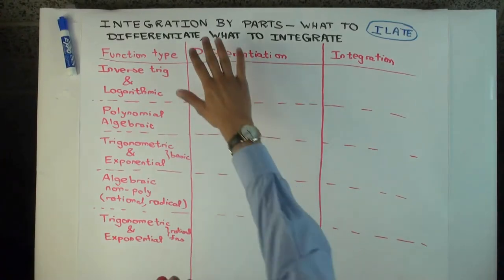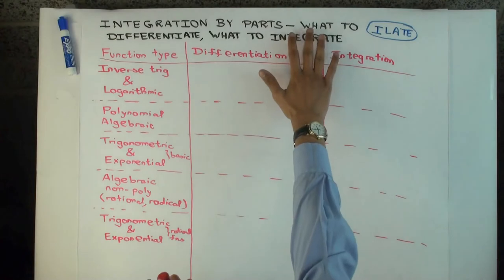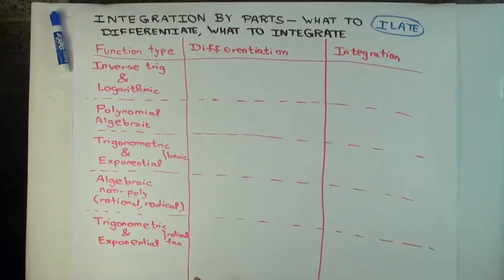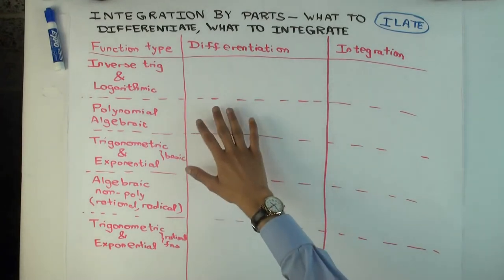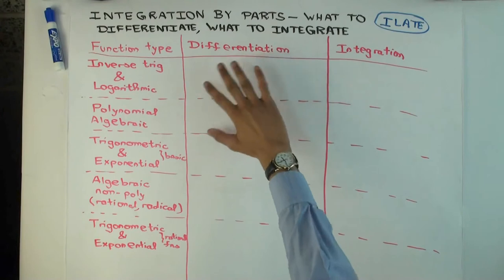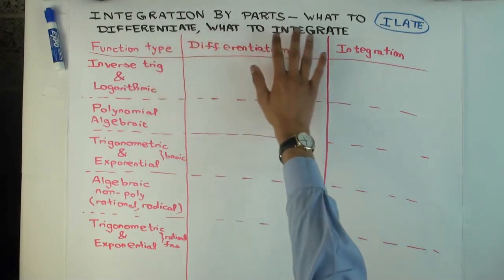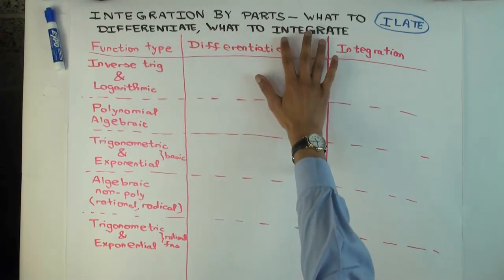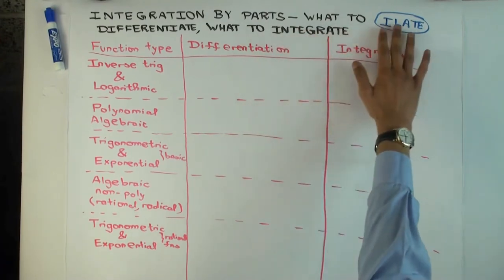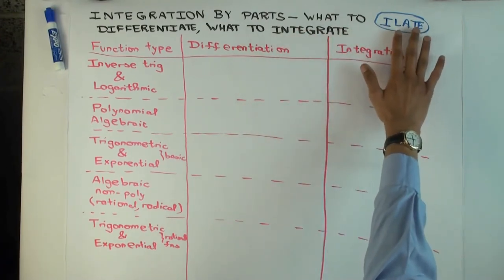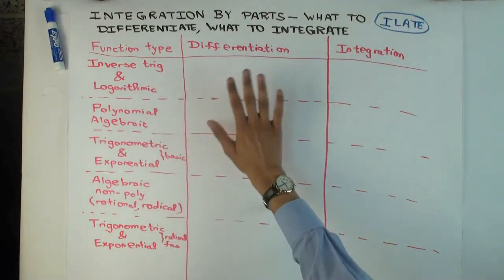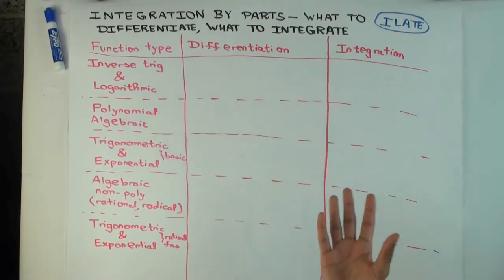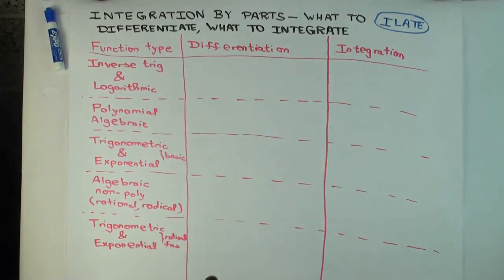In this video we're going to look at integration by parts and do some general strategizing — preliminary thinking about figuring out, when you do integration by parts, what do you choose as your part to differentiate and what do you choose as the part to integrate. We're not yet ready for the final rule, which is the ISLET rule, but we'll do some general strategizing. I'm going to begin with inverse trig and logarithmic functions.